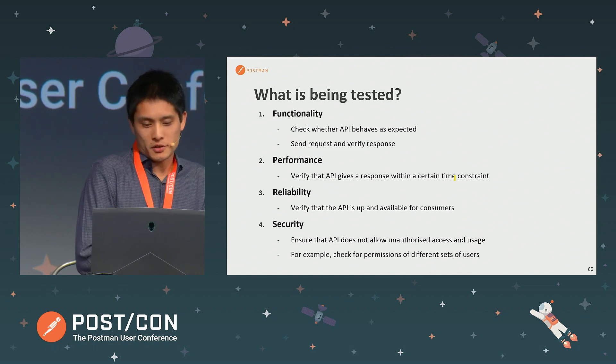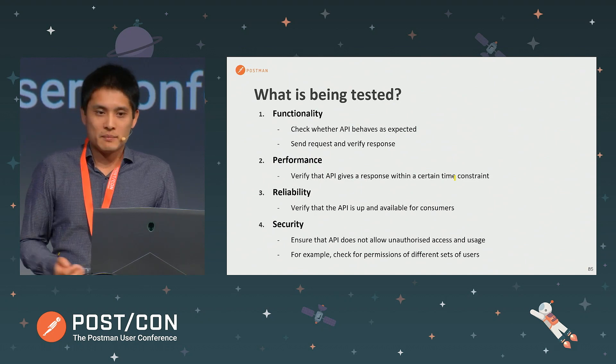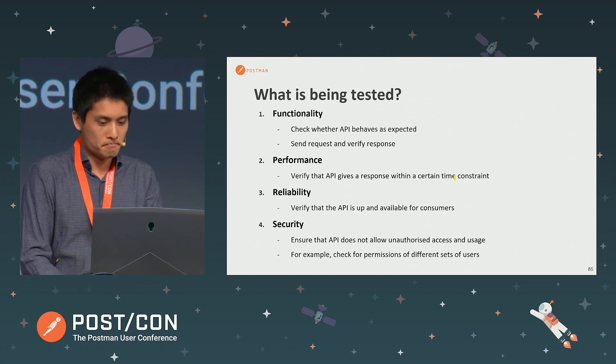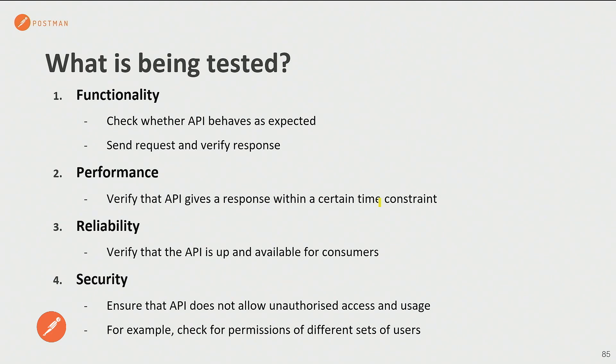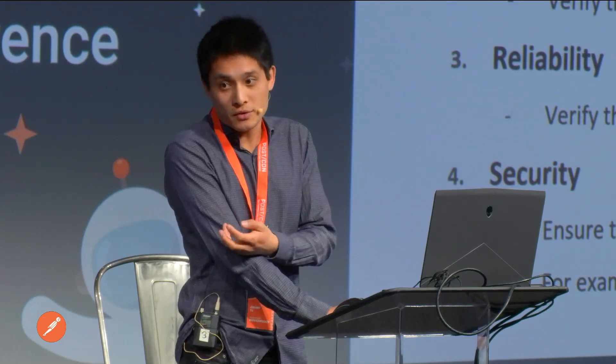We also check for performance — making sure we get a response within a certain time constraint, like under X milliseconds; if it's over that, we have a performance issue. Check for reliability — making sure the API is up and available for consumers and downtime is minimized. And security — making sure we don't allow unauthorized access, and also checking permissions for different sets of users. Some users might only be able to do GET operations, some might only access certain endpoints, while others might be able to do both read and write operations. We want to test for those different permission sets.